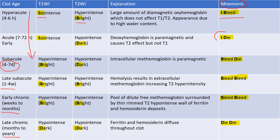Then you have 'I DIE' in case of acute early hematomas, that is seven to 72 hours. It is iso intense on T1 and dark, that is hypo intense, on T2.